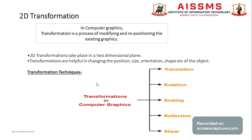In computer graphics, images are generated from a series of line segments which are represented by the coordinates of their endpoints. Because of this, we can make changes to an image by performing mathematical operations on these coordinates. When we change the image this way, we call it an image transformation. In this session we will see different image transformations depending on the technique used.